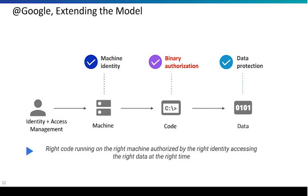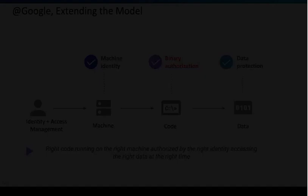We also have a rich binary authorization system to verify that the code running on a device is in fact the code that should be running on that device, and it hasn't been changed — it's been sealed and signed. Those are the only systems that can access data. So if somebody were spoofing a machine identity or running rogue code deployed in our data center without us knowing, they still wouldn't be able to access data because access to the data looks at all of this. Google is really trying to push this model to everybody in the industry, and a lot of this will be available as product from us or through ecosystem partners like Zscaler.